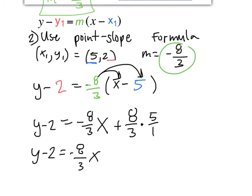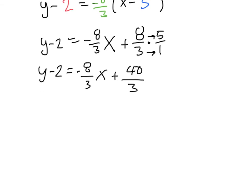Let me write down everything again. y minus 2 equals negative 8 over 3, I almost forgot the negative, x plus, multiply straight across, 8 times 5 is 40, 3 times 1 is 3. Perfect. Let me move this up a little bit more. y minus 2, actually we can add 2 to both sides, plus 2, plus 2. So now you get rid of this part.